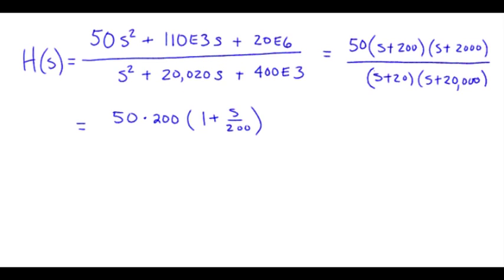And we have another term, 2,000, leaving us with 1 plus S over 2,000. And we'll do the same thing underneath.